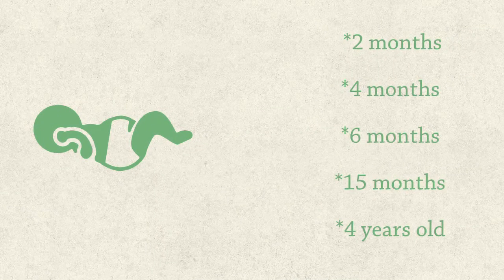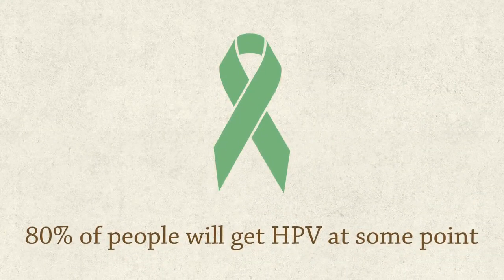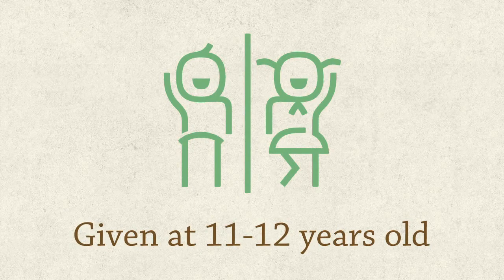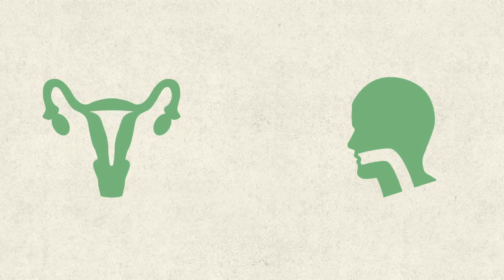The pertussis vaccine is given at two months, four months, six months, 15 months, and again at four years old. Another vaccine questioned by parents is the HPV vaccine, also known as human papillomavirus, which is a common cancer-causing virus. 80% of people will catch it at some point in their life, and currently there are 25,000 cancer-related cases that occur in the United States annually. The HPV vaccine is given to boys and girls between the ages of 11 and 12. HPV is passed by sexual contact. Many parents do not want to give their child this vaccine because they believe in teaching abstinence. But it prevents girls from getting cervical cancer and prevents boys from getting throat and mouth cancer.